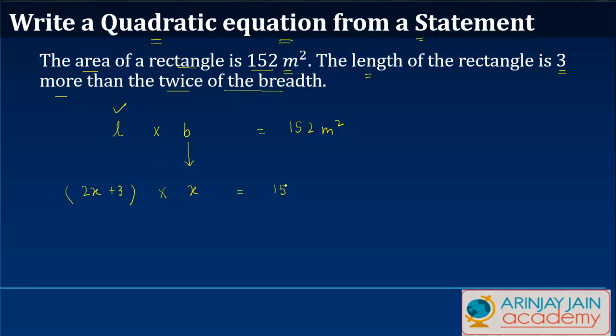So 2X plus 3 times X is equal to 152 meters squared. If I just multiply this, X goes into 2X to make it 2X squared, plus X times 3 gives you 3X is equal to 152 meters squared.